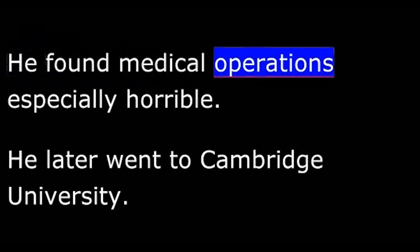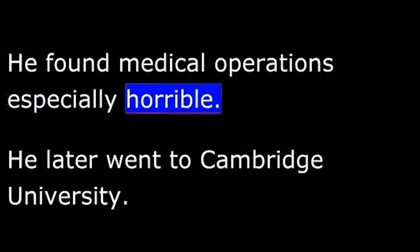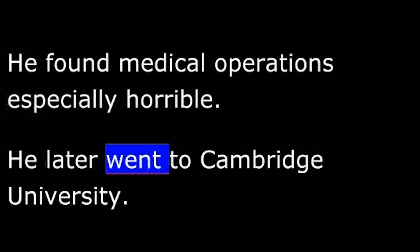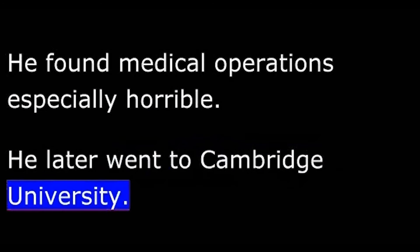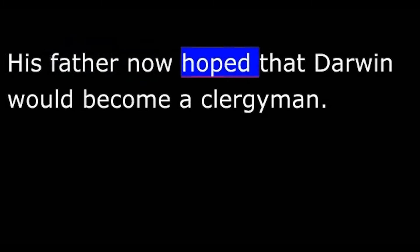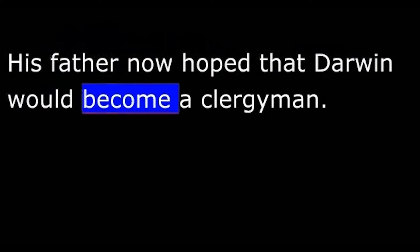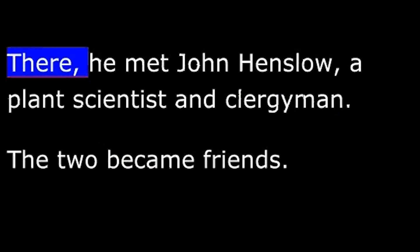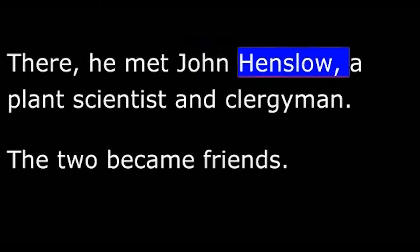He later went to Cambridge University. His father now hoped that Darwin would become a clergyman. But at Cambridge, Charles continued to follow his own interests. There he met John Henslow, a plant scientist and clergyman. The two became friends.